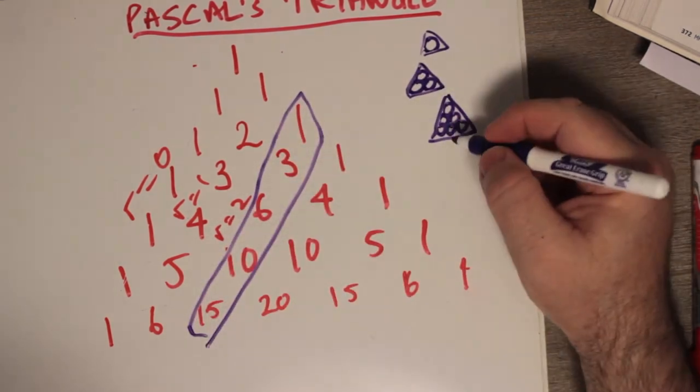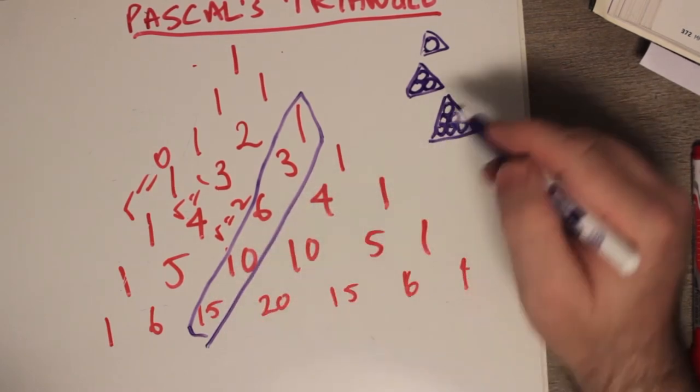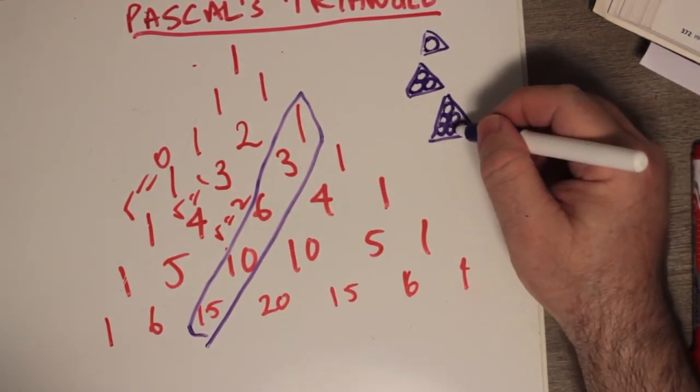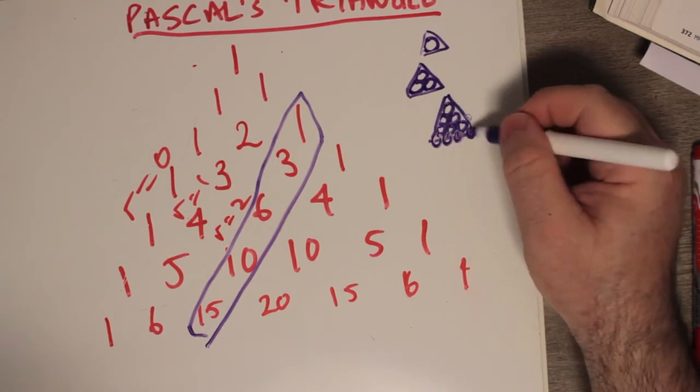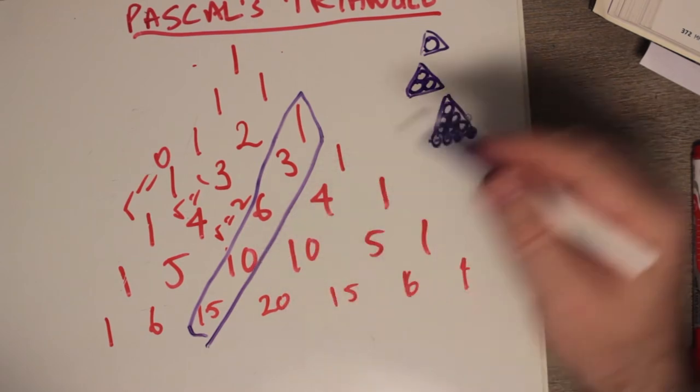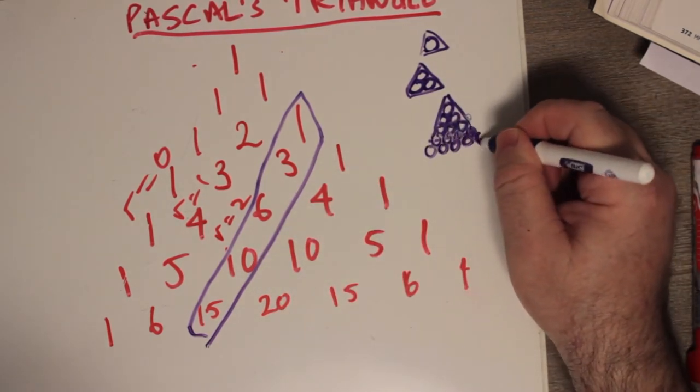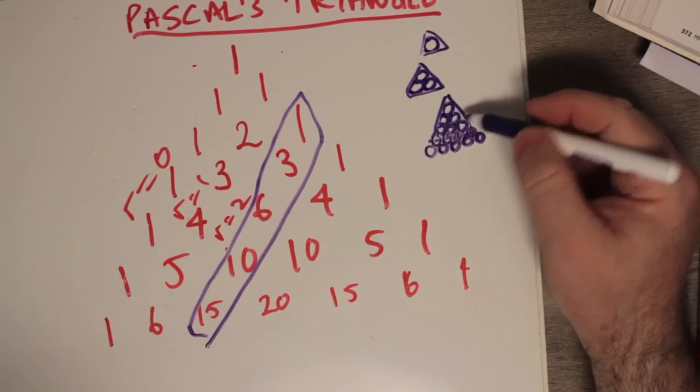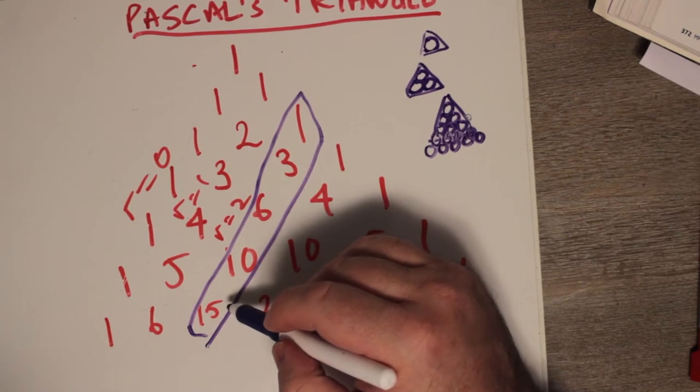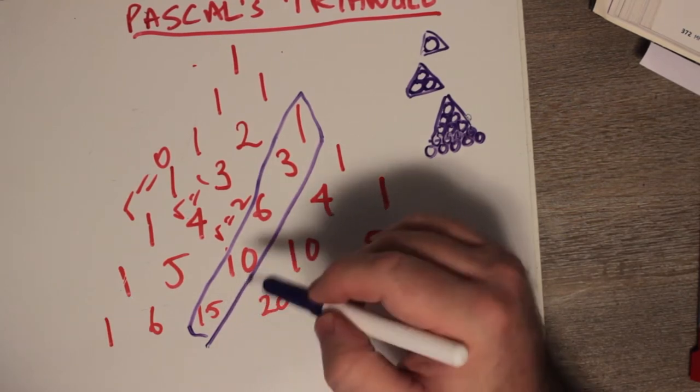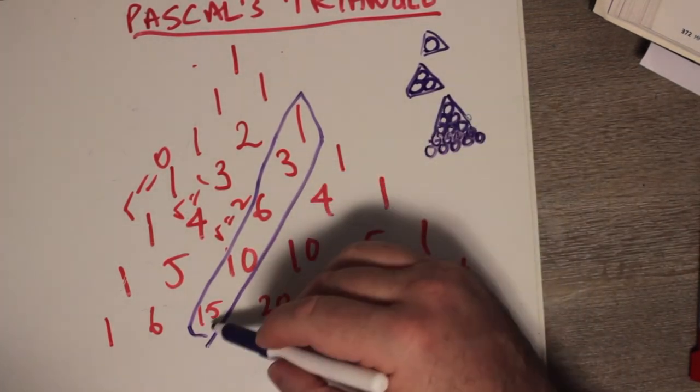These are actually called the triangular numbers. So every time we want to get the next number in the sequence, we simply add a row. So we have one plus two plus three, we just add four more. And we get ten circles for the ten. And then we add five to the gaps in the circles. And we have fifteen of these circles for the number fifteen in the Pascal's Triangle for the triangular numbers.